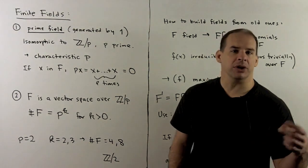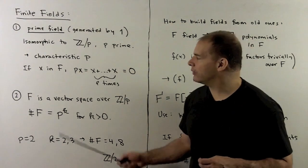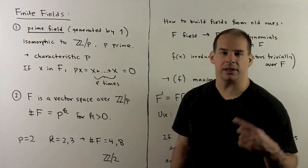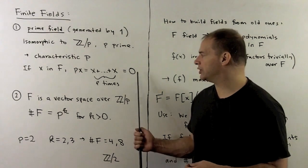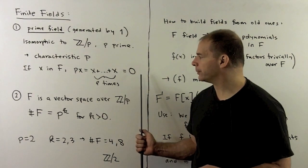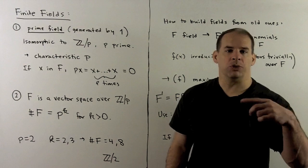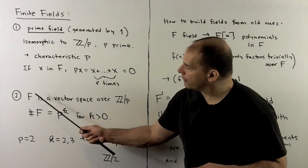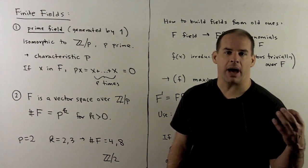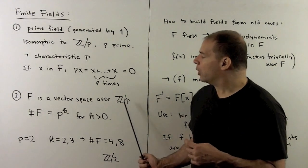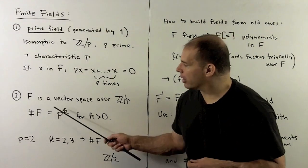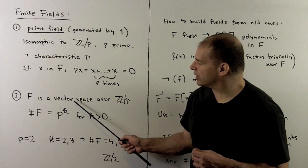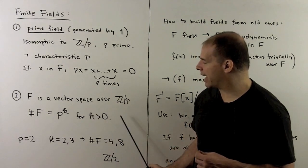Once we have that, our field is of characteristic p. Recall that means if we take any x in our field and take p times x — that's adding x to itself p times — we get zero for any x. Now if we check the rules for vector spaces, we'll see that our field F is a vector space over the field Z mod p. So once we pick a basis, the number of elements in our finite field is always p raised to some positive power k.